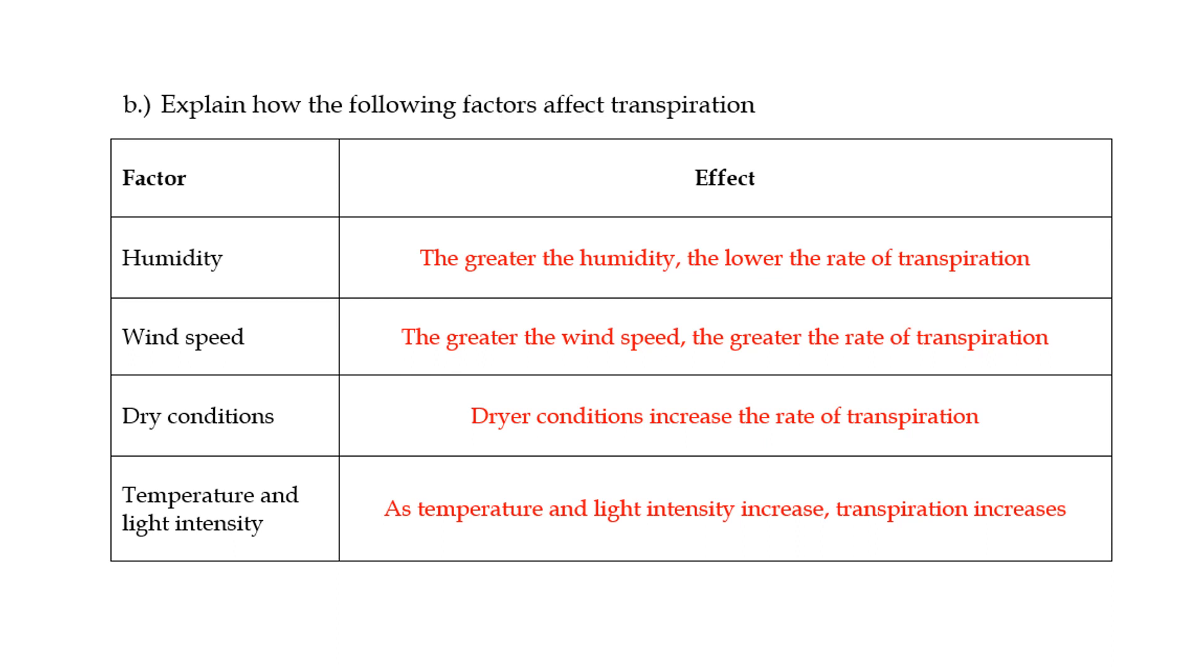Wind speed. So obviously, if there's great wind speed, there's going to be a higher rate of transpiration. And the reason for that is that when there's a lot of wind, the wind blows away the water vapor from the surface of the leaf really quickly, causing the leaf to lose more water. And as a result, creating a transpiration pull that increases the rate of transpiration.